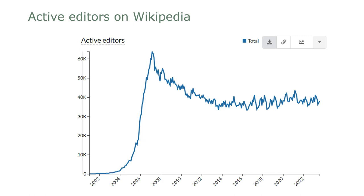So why do we have an issue? This slide shows the number of active editors on Wikipedia. We traditionally divide the era of Wikipedia into three ages. The first age is the exponential growth era, where the number of active editors rose to over 60,000, peaking in 2007 — about the time I started editing. Then there was the 'death spiral' era through to 2014.